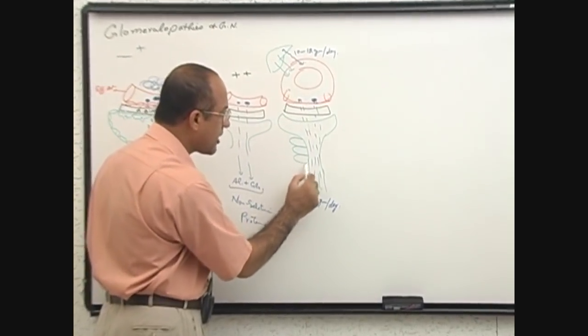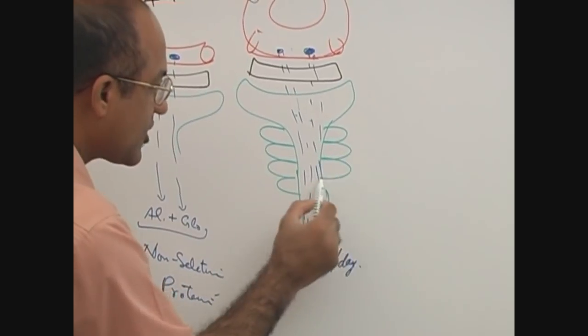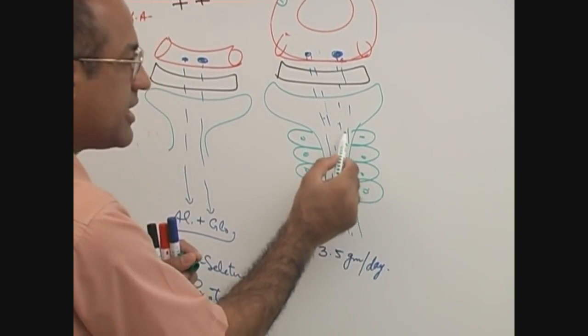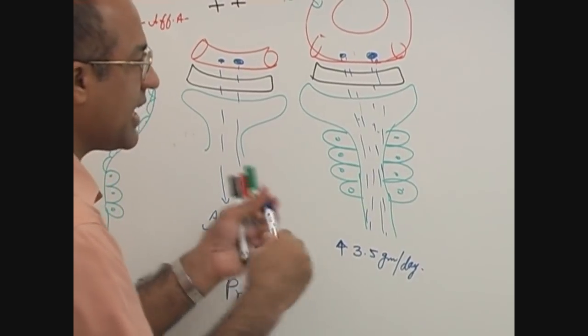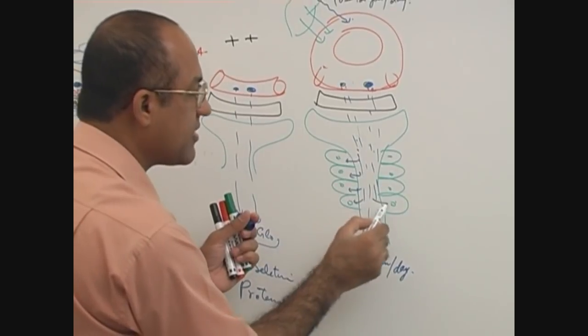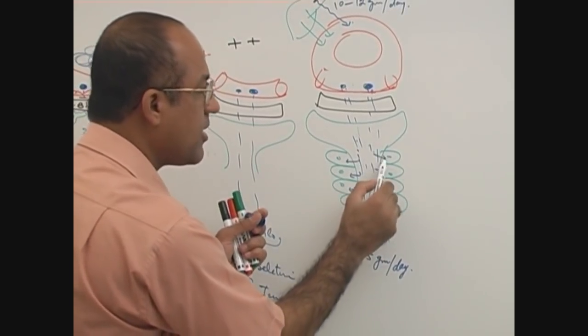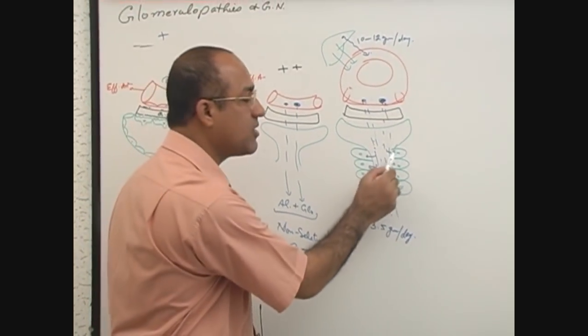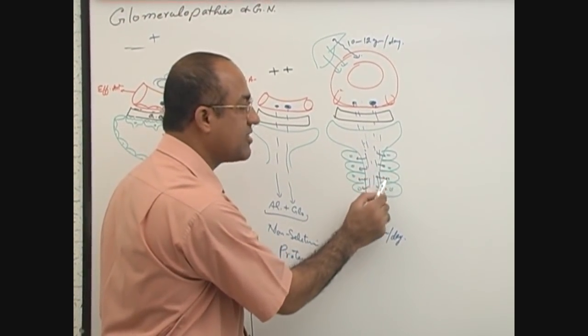Here are your friends, proximal convoluted tubular cells, and they love to eat up the proteins. The proteins which are leaking down, many of them by pinocytic process are taken up into these cells, the cells of proximal convoluted tubule, and a lot of proteins are catabolized there.